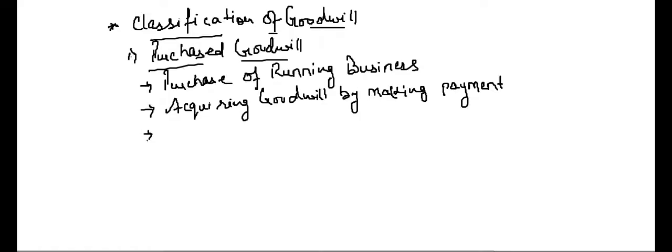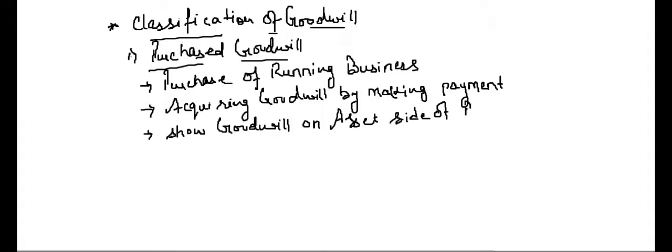We will show this purchased goodwill — because we have made some payment for it — on the asset side of the balance sheet. This is purchased goodwill: we are acquiring the goodwill of a business by making a payment at the time of purchase of business. I am acquiring his goodwill along with the other assets of the business by making some payment, and that goodwill will be shown in my balance sheet on the asset side.